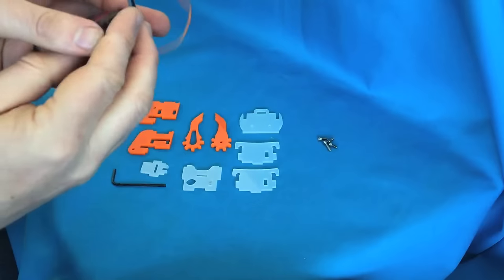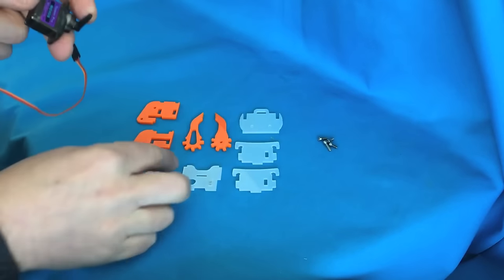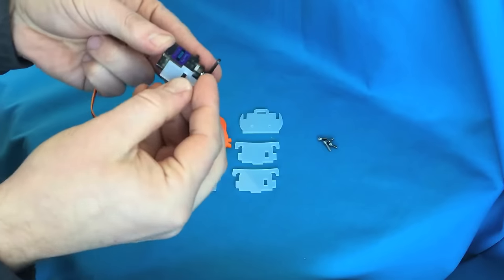Now we're going to build the grip. Take the servo and make sure the arm is adjusted like you can see in the picture.